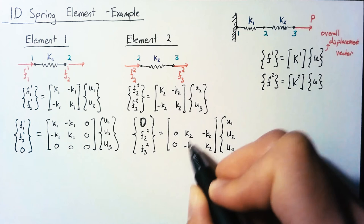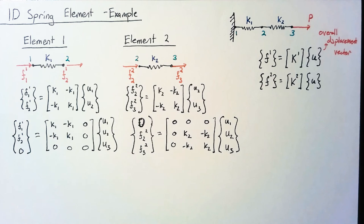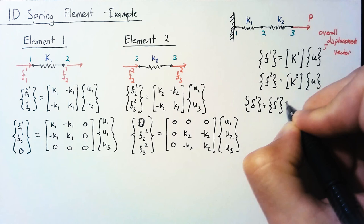Now what we're going to be doing once we have it to this point is adding these two equations together. So if I were to write this up here, we would have f1 plus f2 equals k1 plus k2 all multiplied by our overall displacement vector.